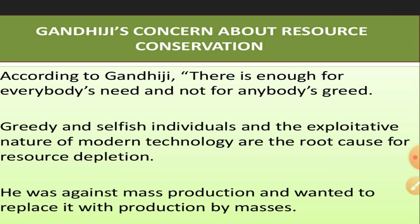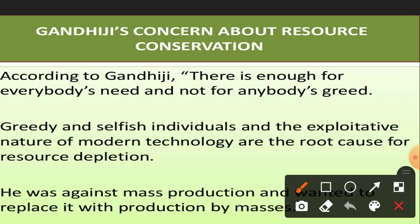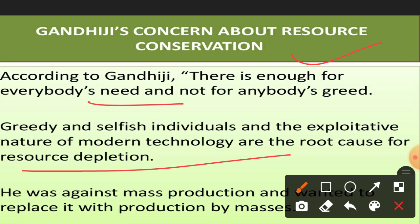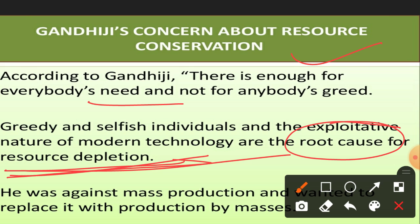Looking at Gandhiji's thoughts about conservation of resources: Gandhiji said that in India there is enough for everybody's needs, but we don't have anything for completing the greeds. We have enough resources to complete the needs of every person, but if a person becomes greedy we cannot satisfy that greed. Greed and the selfish, exploitative nature of modern technology are the root cause of resource depletion — we are not using resources, we are exploiting them, and this is the major cause of depletion.